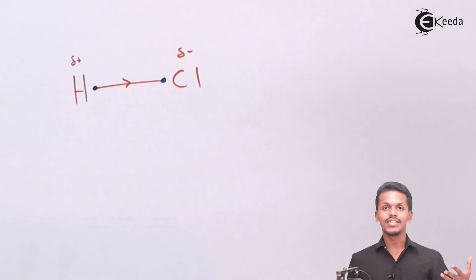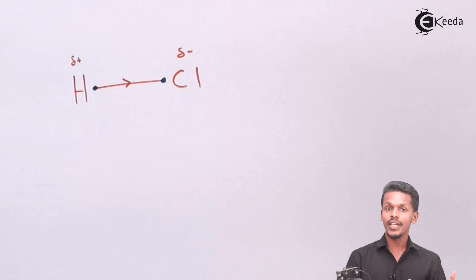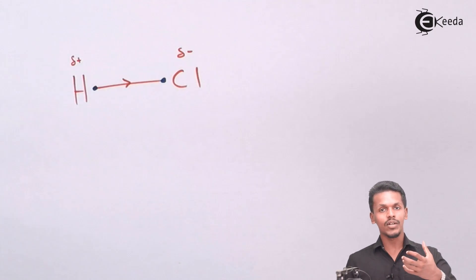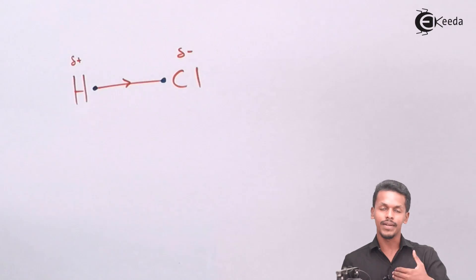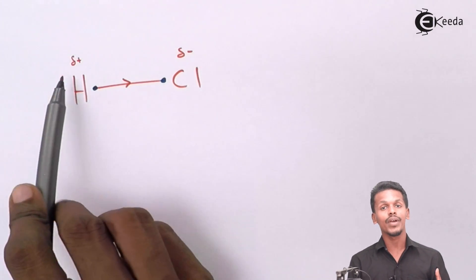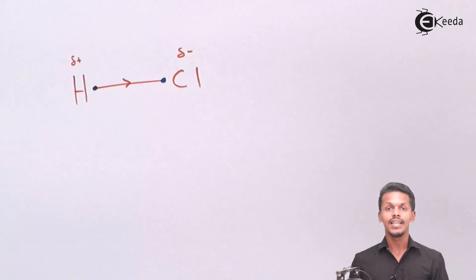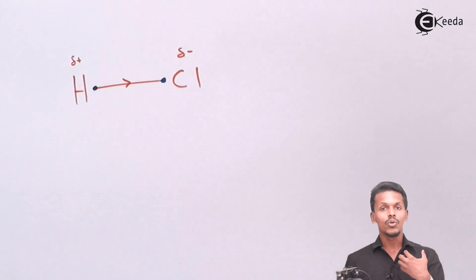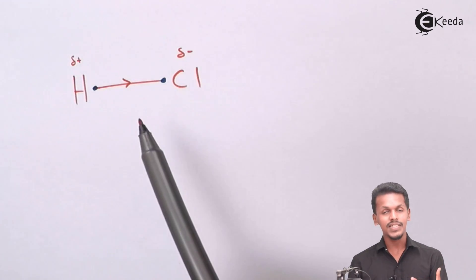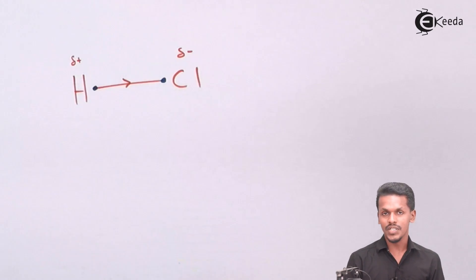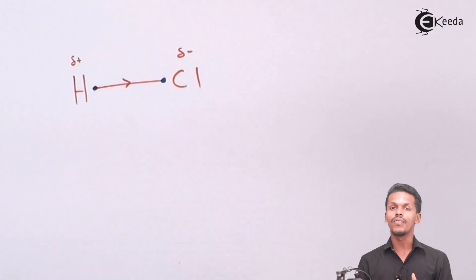Chlorine is more electronegative. Meanwhile, we could also say that hydrogen is more electropositive because it has the tendency to lose electrons. That tendency causes electrons to move towards the chlorine, and hence hydrogen acquires a positive charge. So this positive charge arises because hydrogen tends to repel electrons towards the chlorine, making chlorine highly electronegative and the hydrogen atom electropositive. This was the meaning of electronegativity.